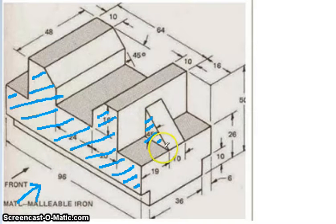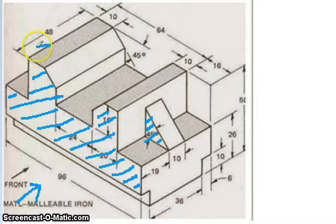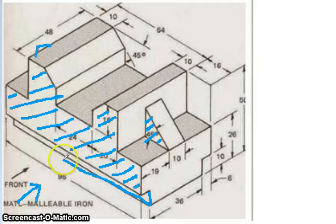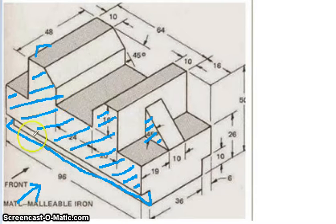After that first surface, you can identify others: the triangular-shaped surface on one side, and a similar triangle on the other side — though that one is partly hidden. So far we have surfaces one, two, and three. Apart from that, there is one surface visible at the bottom. So from the front you can see one, two, three, and four surfaces in total.